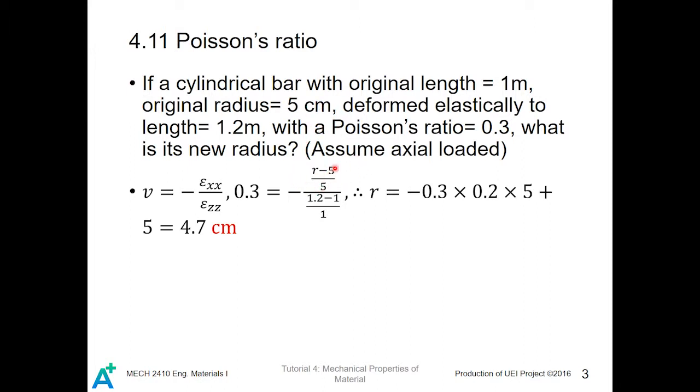For the transverse direction, we define the radius. It's equal to the new radius minus 5, where 5 is the original radius, over 5. Rearranging the term we get R is equal to this value. And the unit for R is cm, because we use cm in this term here.